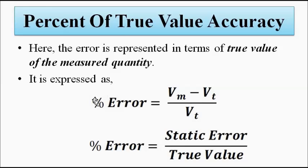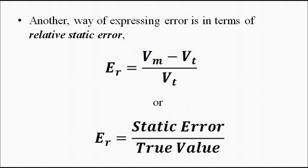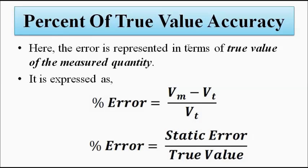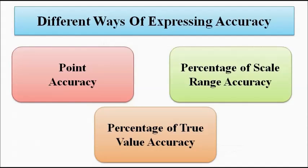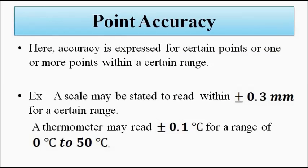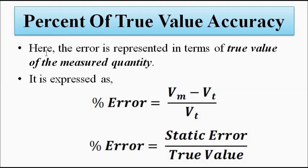The third way is percentage of true value accuracy. This is the same as the relative static error. The error is represented in terms of the true value of the measured quantity — that is, the static error (Vm minus Vt) divided by the true value Vt. In all three ways, accuracy is represented in terms of error, which is why when discussing accuracy we must also discuss error, because the accuracy of a measuring system is always specified in terms of percentage of error.